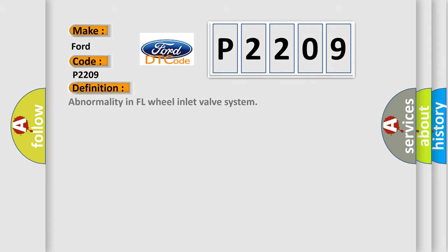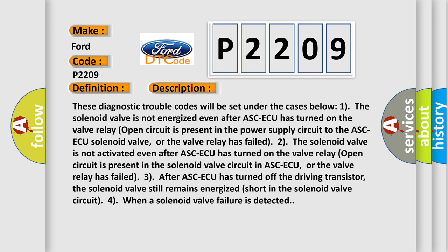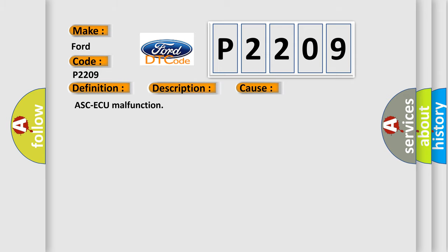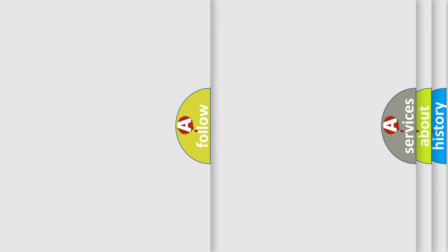The basic definition is: Abnormality in FL wheel inlet valve system. These diagnostic trouble codes will be set under the following cases. One: the solenoid valve is not energized even after ASC/AQ has turned on, the valve relay open circuit is present in the power supply circuit to the ASC/AQ solenoid valve, or the valve relay has failed. Two: after ASC/AQ has turned off the driving transistor, the solenoid valve still remains energized — a short in the solenoid valve circuit. When a solenoid valve failure is detected, this diagnostic error occurs most often in these cases: ASC/AQ malfunction.